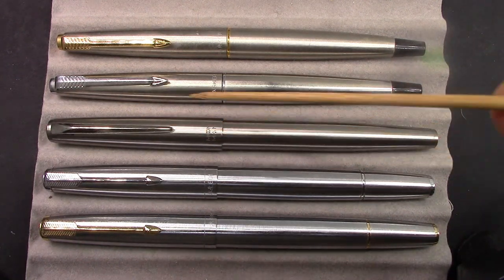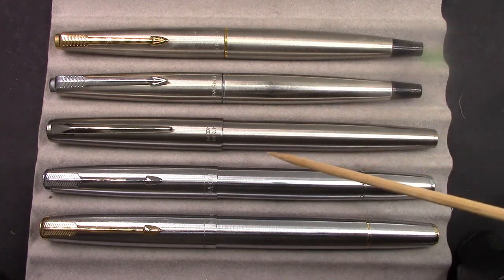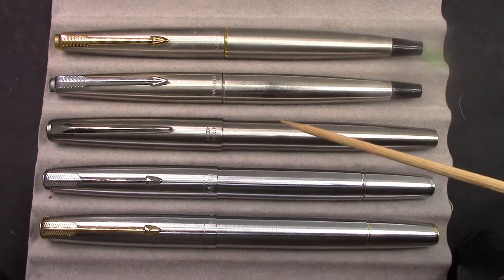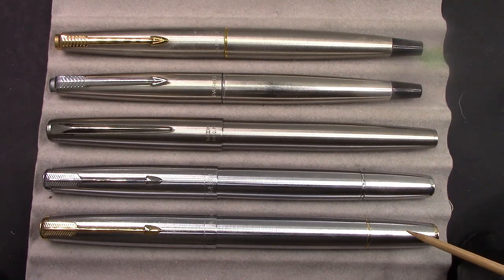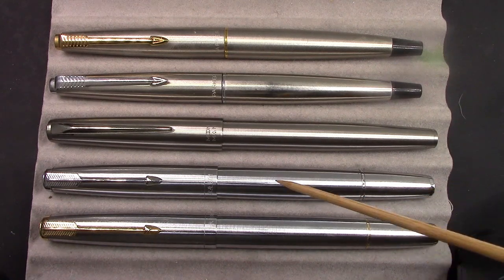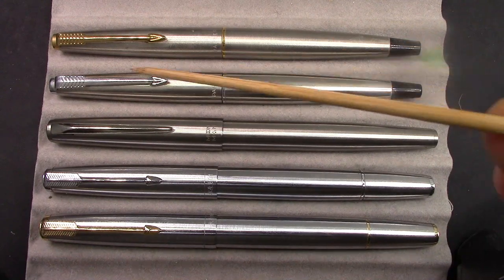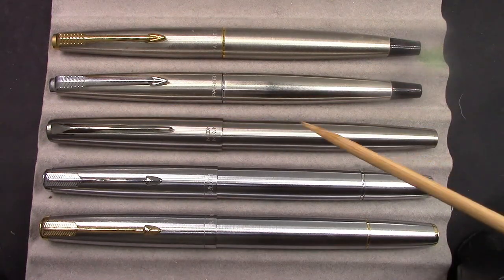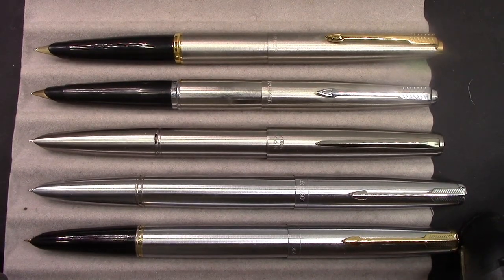So I thought this would make a good grouping. We have two of the WingSung 601s - gold trim, chrome trim - the MoonMan, and then two Parker 45s, one with gold trim and one with chrome trim. The color is not that much different. This color actually looks pretty close to this color, which is a brushed stainless steel, but it feels different. I can't really explain it.